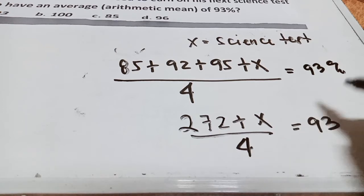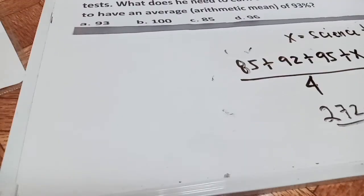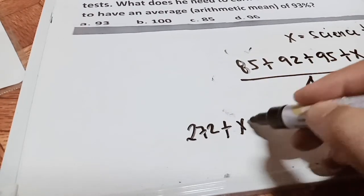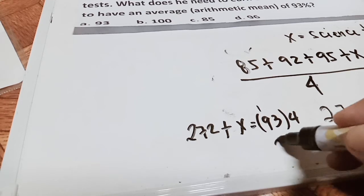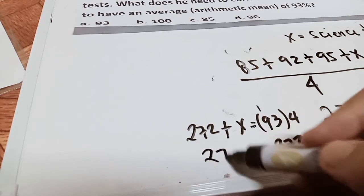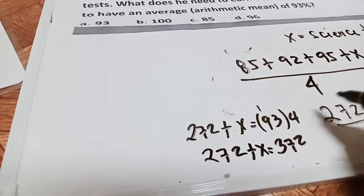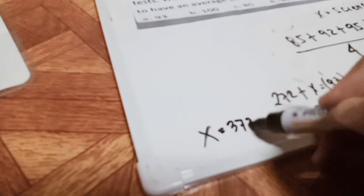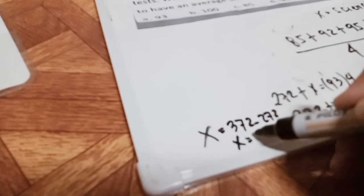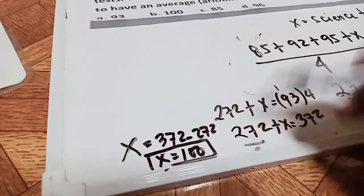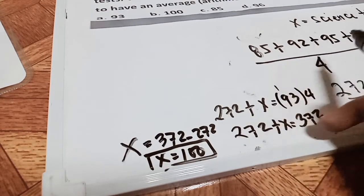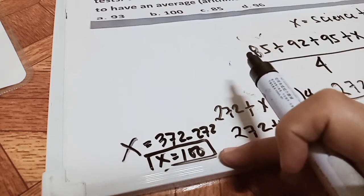Plus x, divided by 4 equals 93. This will be our first step. We need to multiply, cross multiply by 93. 272 plus x. 93 times 4, we have 12, carry 1, 36, we have 37. 272 plus x equals, and then after that, x will be, so let's try to have x equals 372 minus 272. The answer is 100.